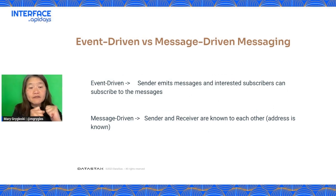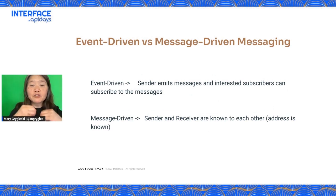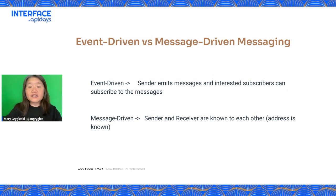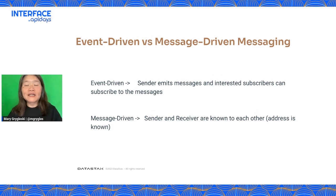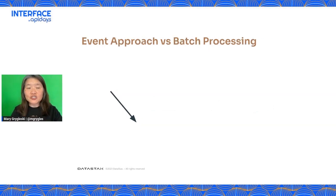With event-driven messaging, the sender sends messages and doesn't care who receives them — it's up to those interested to subscribe to receive them. That's one form of event-driven messaging. Message-driven messaging works like a queue: the sender sends messages to a queue at a known address, and the receiver picks them up. Once picked up, the message is gone from the queue — that's the key difference between event-driven and message-driven messaging.